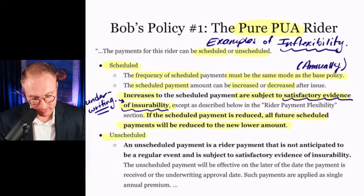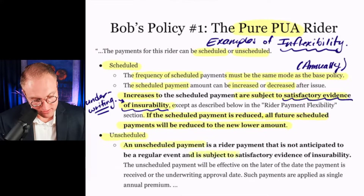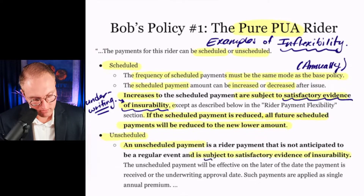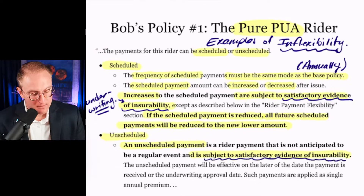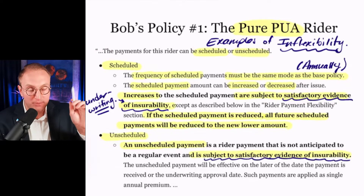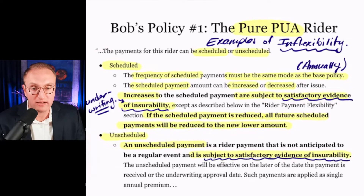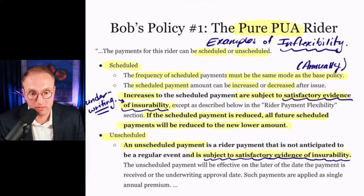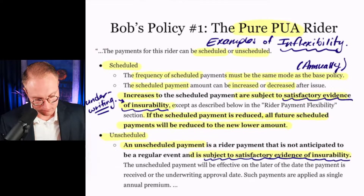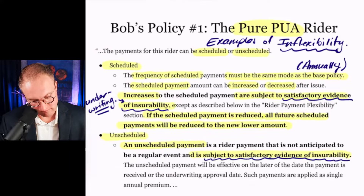What about unscheduled premium payments? Well, unscheduled ones are also subject to evidence of insurability — more underwriting. Meaning Bob does not have the contractual right to make a PUA premium payment just whenever he wants. The company's going to get to tell him that it's okay.